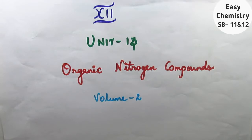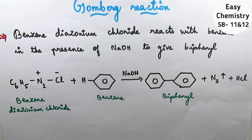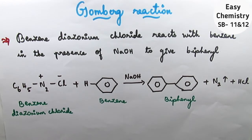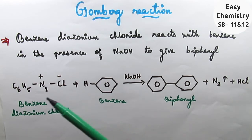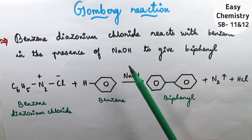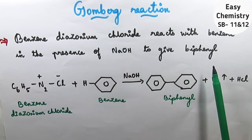Now let's talk about Gomberg reaction. This is a very important naming reaction, very easy to write. Benzene diazonium chloride reacts with benzene in the presence of NaOH to give biphenyl.